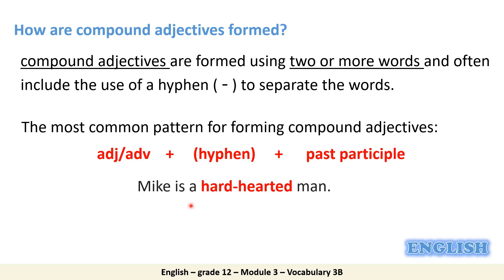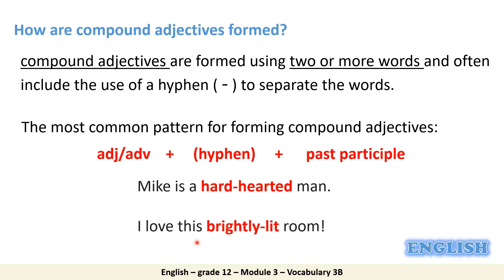For example: Mike is a hard-hearted man. Hard-hearted is a compound adjective made up of an adjective — hard — a hyphen, and then the past participle form hearted. Another example: I love this brightly-lit room. Brightly is an adverb, followed by a hyphen, then lit, which is the past participle form. So brightly-lit works as a compound adjective describing the noun — the room.